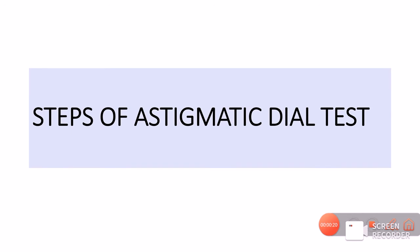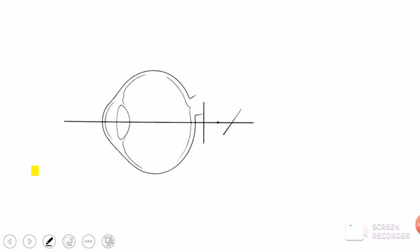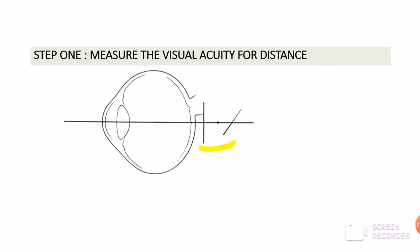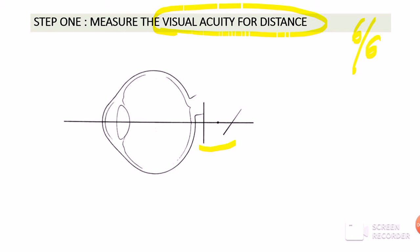Now let us go through the steps of the astigmatic dial test, starting with a patient who has compound hypermetropic astigmatism, where both images from both meridians are being formed behind the retina. The first step is to measure the visual acuity for distance. We make the patient read the Snellen's chart and achieve the best visual acuity of about 6/6 using spheres only — no cylinders at this stage.